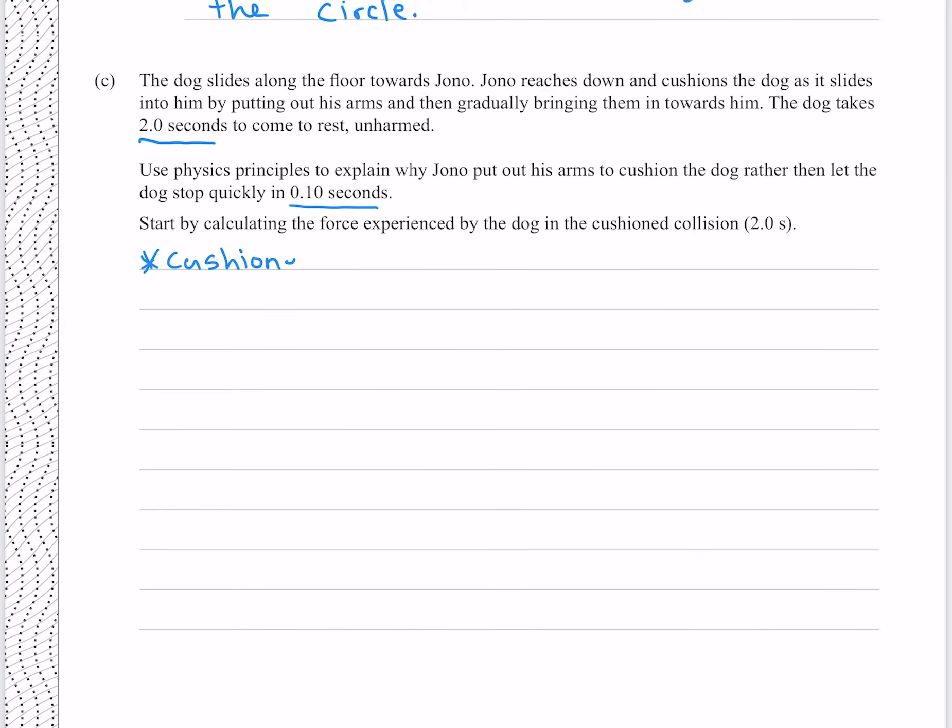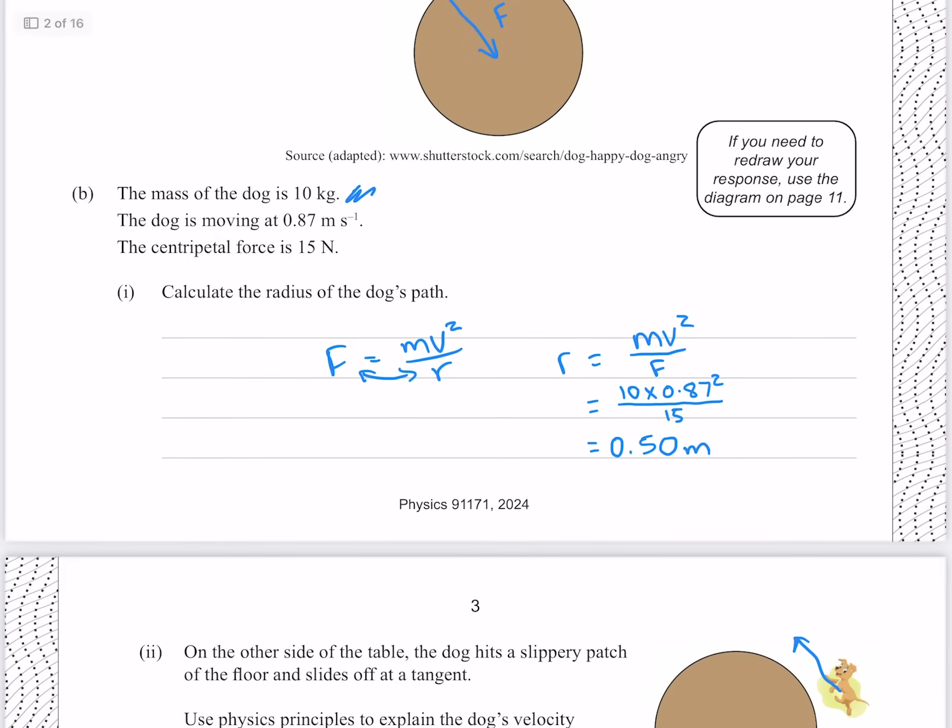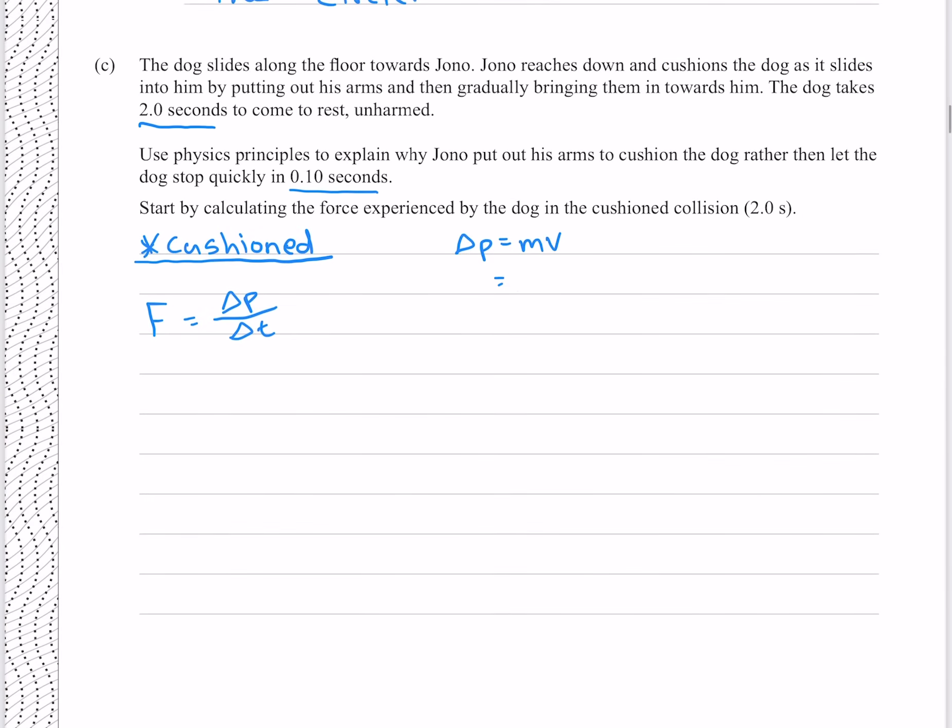In the case where the dog is cushioned, we can use the equation that our force is going to be equal to the change in momentum divided by the duration over which it changed. To find our change in momentum, which is going to be the same in both our cushioned and uncushioned cases, we need our mass and velocity. The mass was 10 kilograms and our velocity was 0.87, which gives us 8.7 kilogram meters per second. Putting that number in and dividing by our time of two seconds, we get 4.4 newtons to two significant figures.